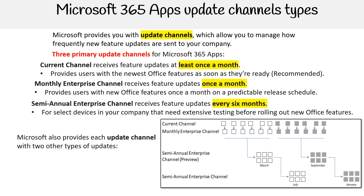Microsoft also provides each update channel with two other types of updates that are released on the second Tuesday of every month. There are security updates, which help keep Office protected from potential malicious attacks, and non-security updates — also known as quality updates — which provide stability or performance improvements for Office. So that's the Microsoft 365 apps update channels types.